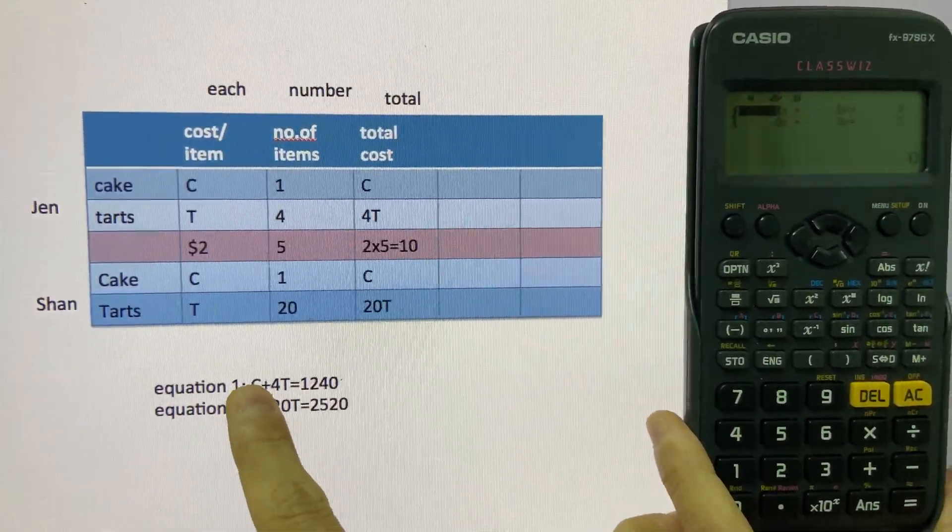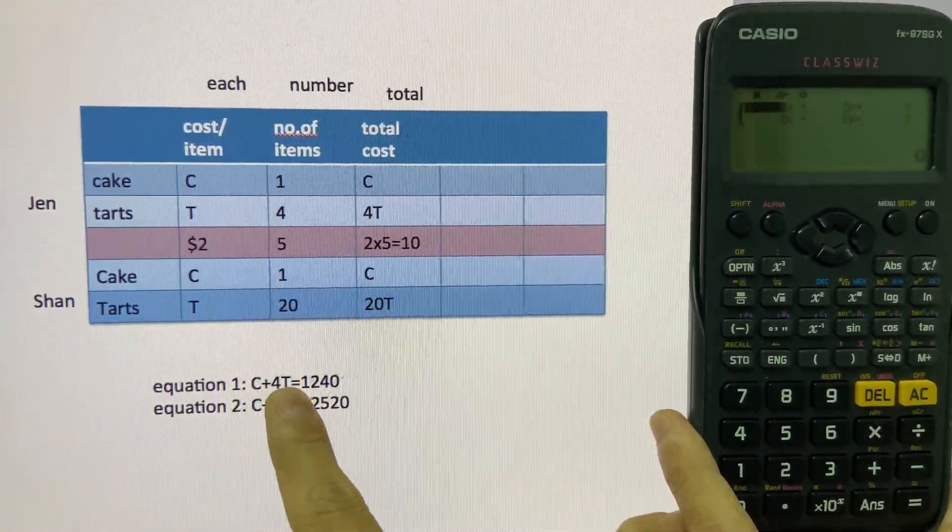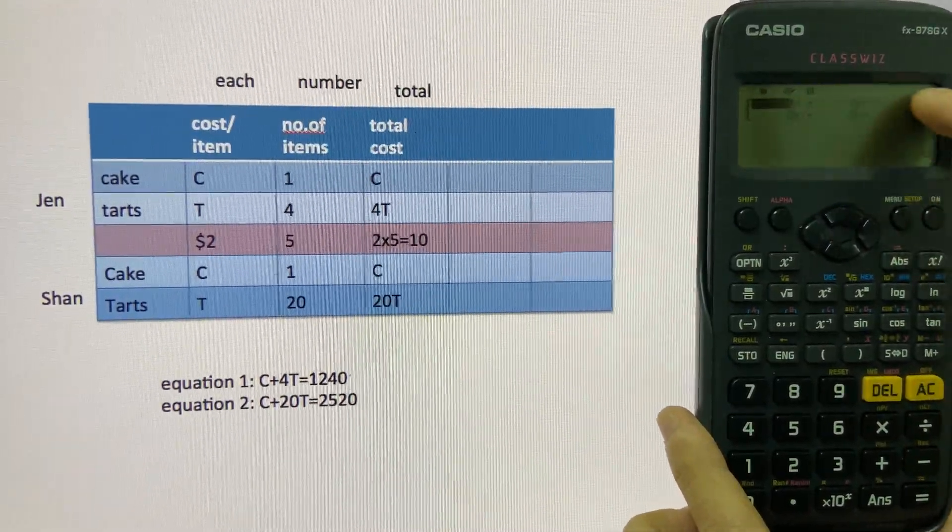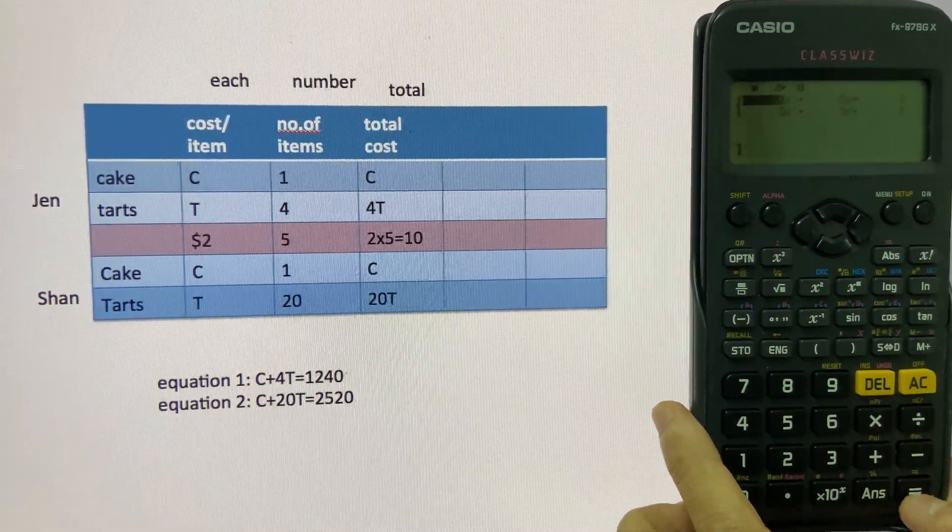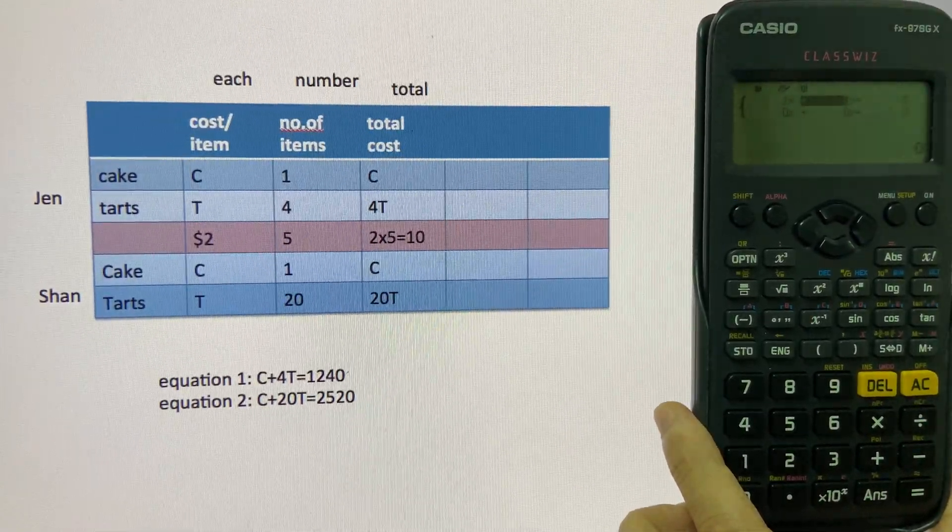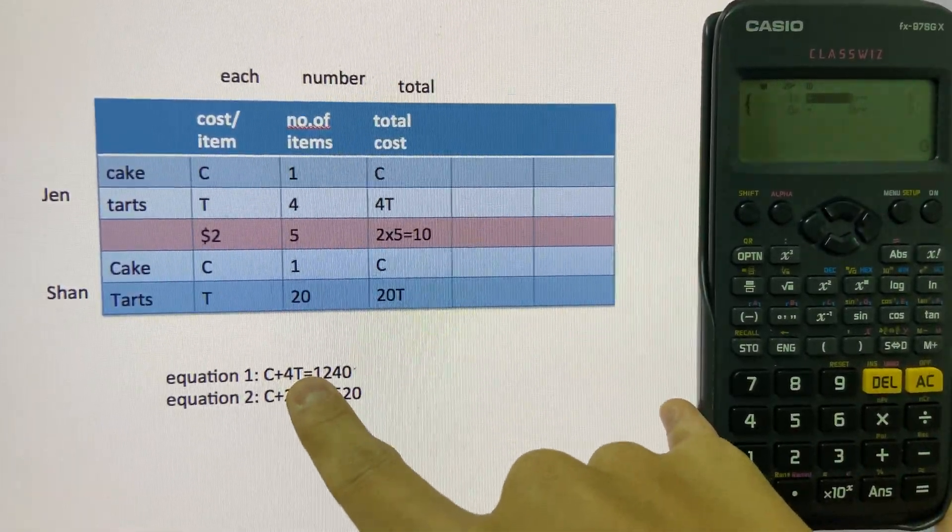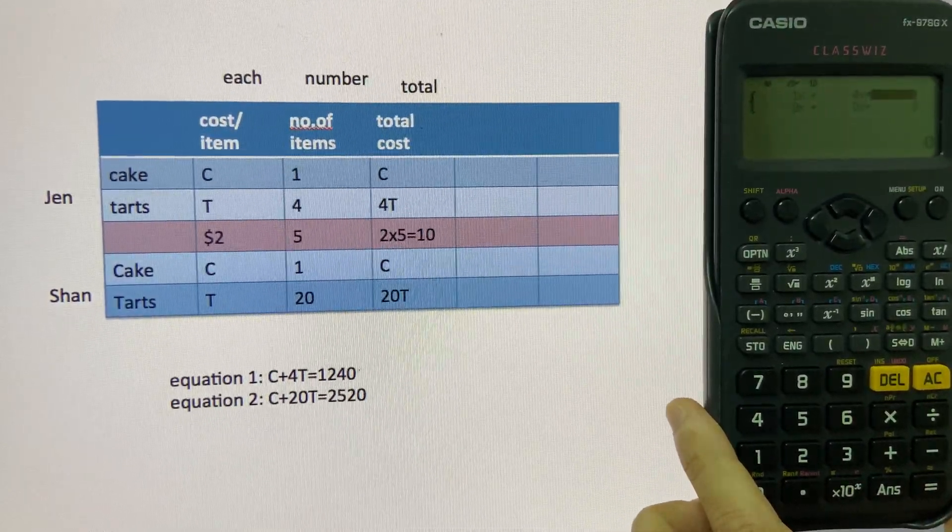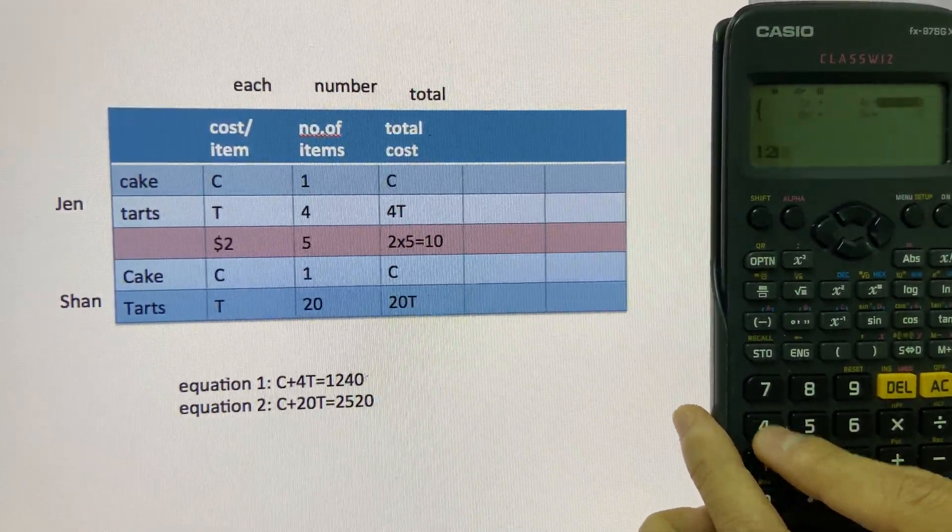So how many C do you have here? You have 1C plus 4T equals to 1240. So your first equation here is 1X, and then 4T, that means 4Y. 4, and then 1, 2, 4, 0.